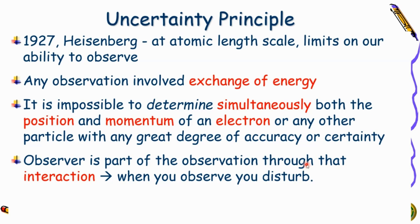Heisenberg concluded it is impossible to determine simultaneously both position and momentum of an electron with great accuracy. When you observe, you disturb. I'll give an example: when you're playing games in your room and your mother opens the door, you quickly switch off the game and pretend you're studying. Your mother is an observer who disturbs you. That's the uncertainty principle — the observer is part of the observation through that interaction.